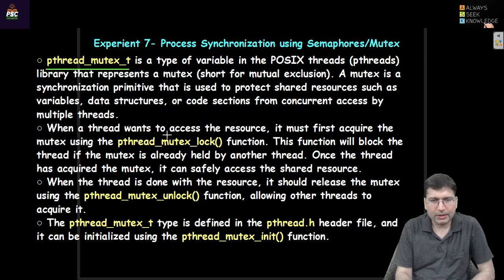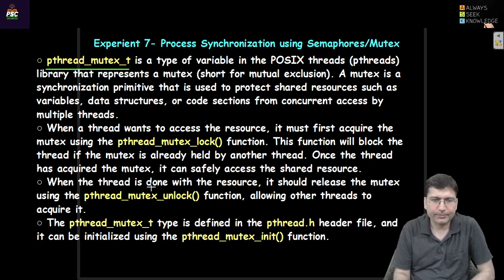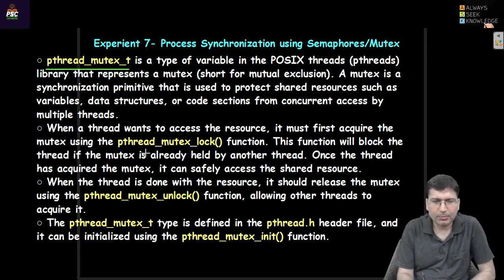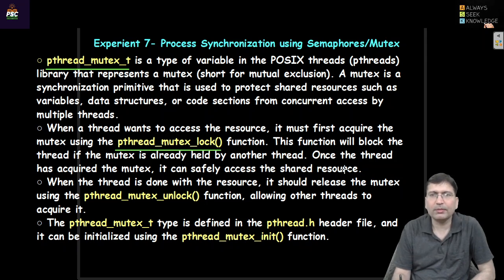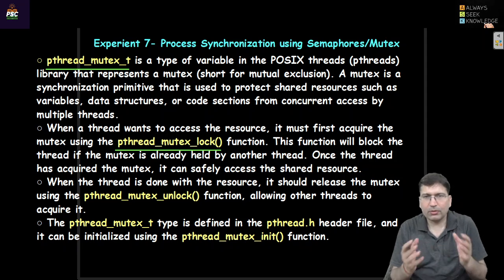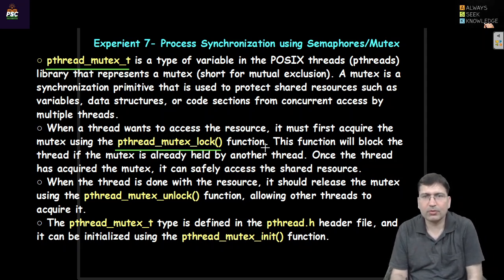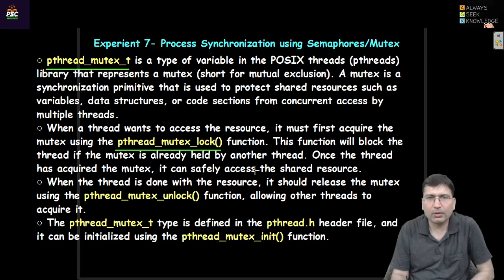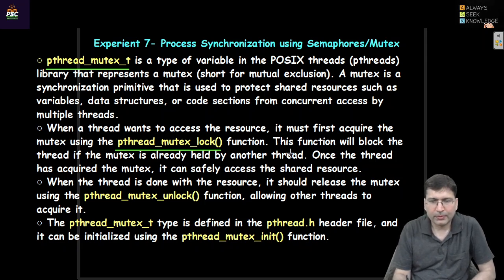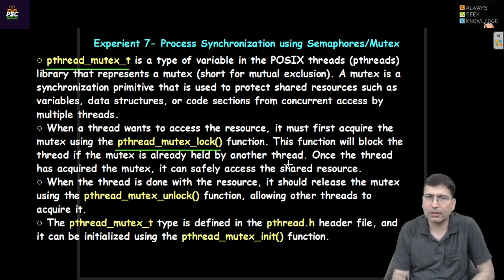When a thread wants to access a resource, it must first acquire the mutex — it must first acquire a lock on the mutex with the help of pthread_mutex_lock. This is a very important function. If this function executes successfully, the lock will be acquired on the mutex variable. This function will block the thread if the mutex is already held by another thread.